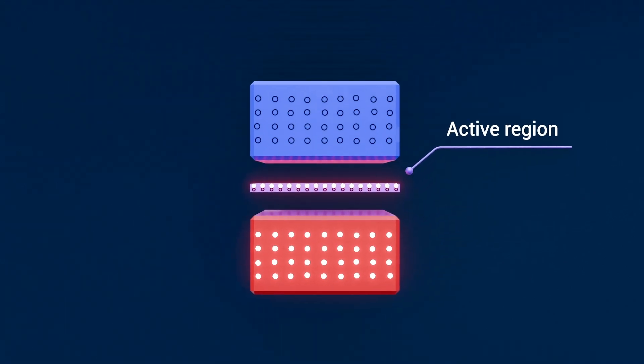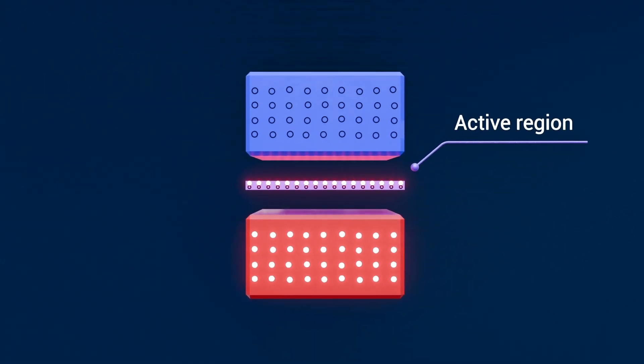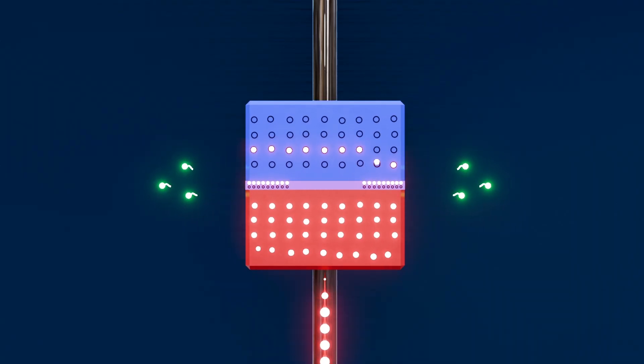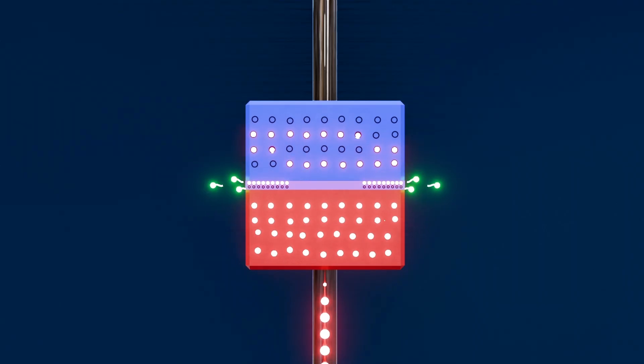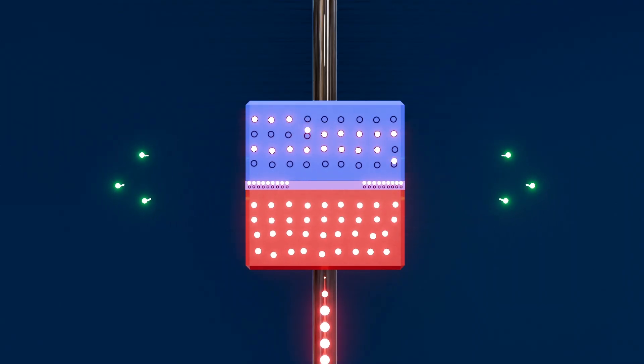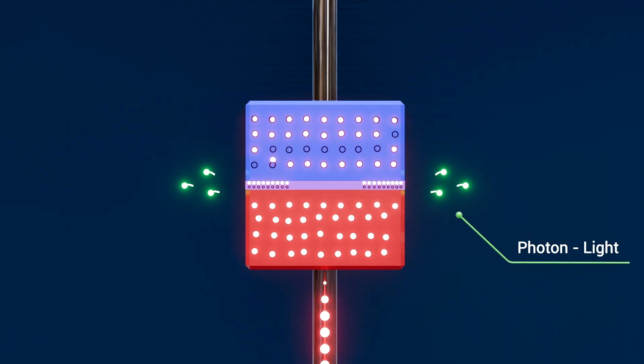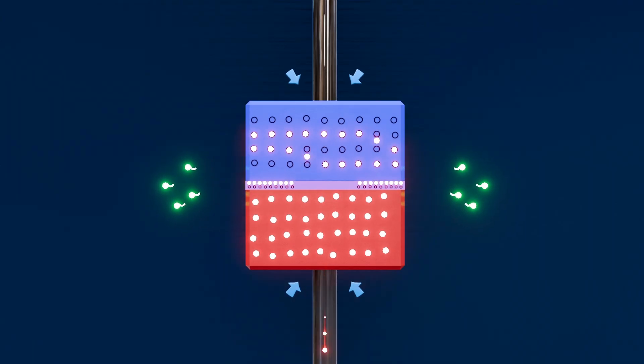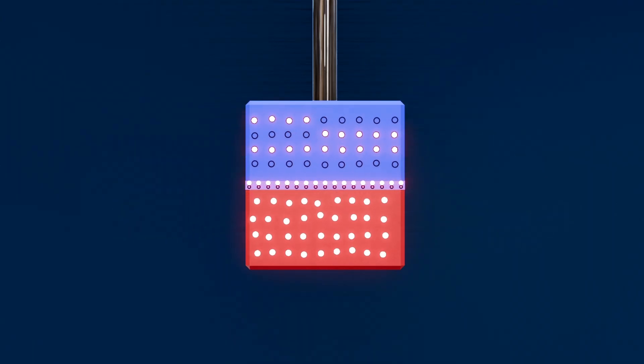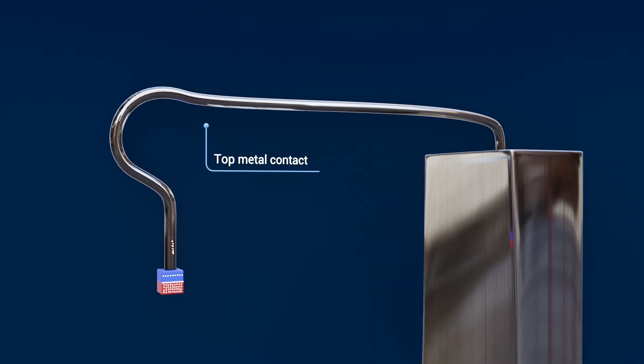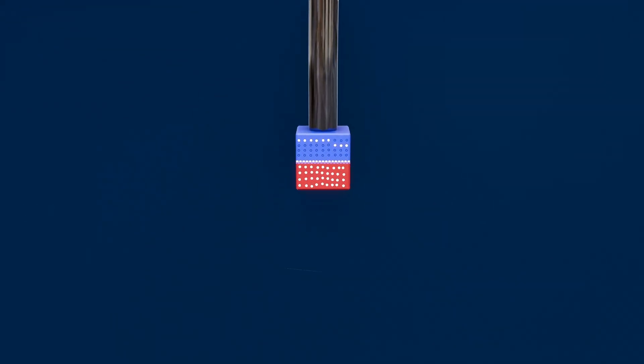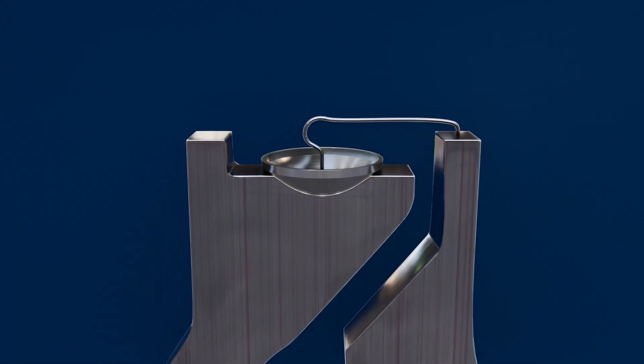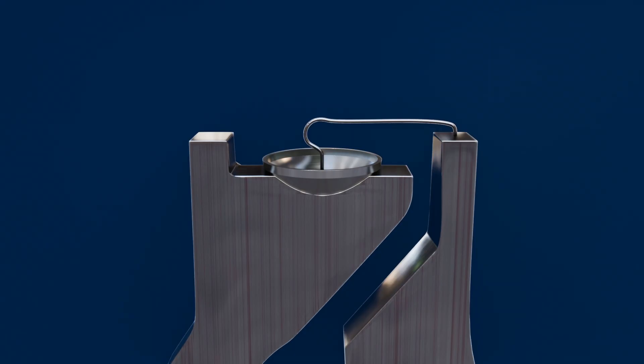Sandwiched between them is the active region, a wafer-thin zone. When we apply forward bias, electrons flow from the n-side into this region and recombine with holes from the p-type side. Each recombination event releases energy as a photon, light. To feed that flow of electrons, we attach metal contacts on both sides of the junction. A tiny wire bond connects the top contact to the external lead frame, while the bottom contact is often part of the base itself. These metal pathways ensure current reaches the active region with minimal resistance.